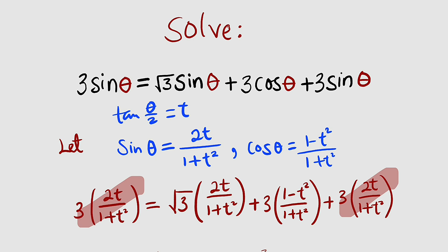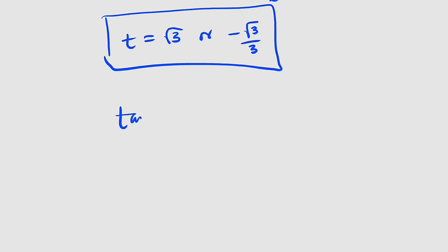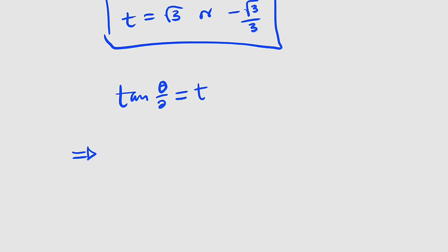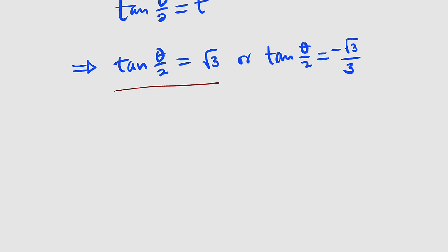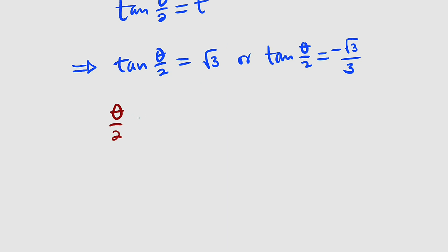So we substitute tangent of theta divided by 2 equal to t. For the first case, tangent of theta divided by 2 equals root 3. We want to find what angle has tangent equal to root 3 — the arc tangent of root 3 is pi over 3. So theta divided by 2 equals pi over 3. Since tangent is periodic every pi, we add multiples of pi k.